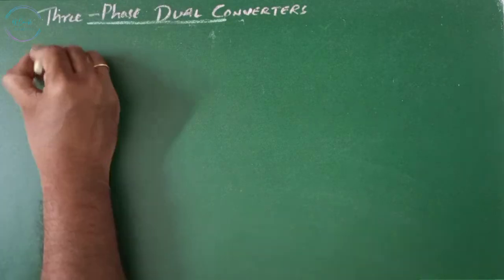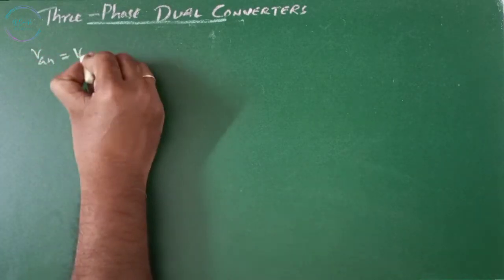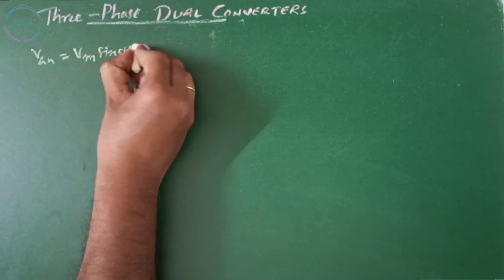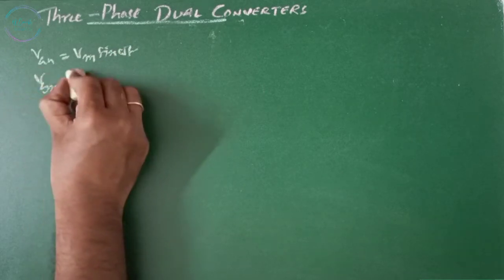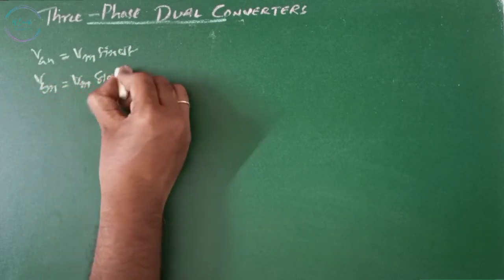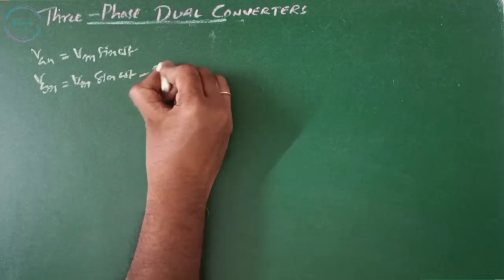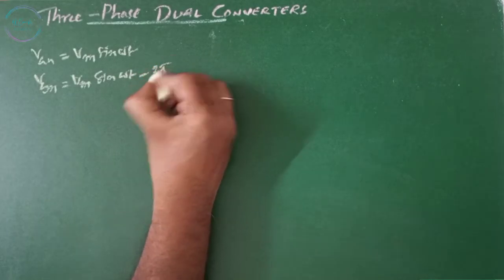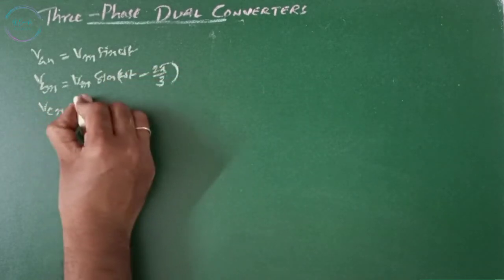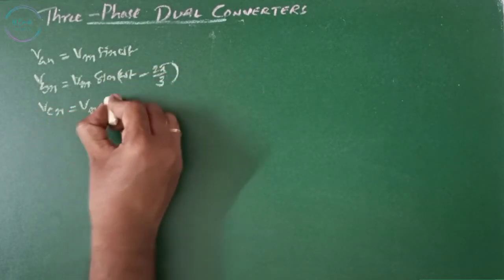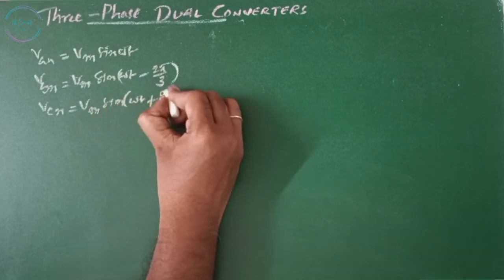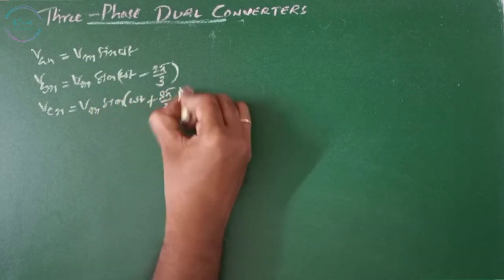VAN equals Vm sin(ωt), VBN equals Vm sin(ωt minus 2π/3), and VCN equals Vm sin(ωt plus 2π/3). These are the line-to-neutral voltages.